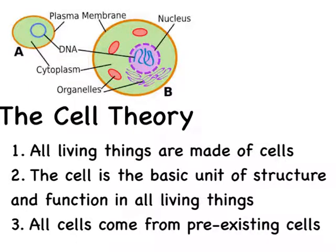And so, after all of these scientists for many years did all sorts of research, we took their work, put it together into a cohesive theory, and it's called the cell theory. The cell theory, as it was first written, had three main parts.